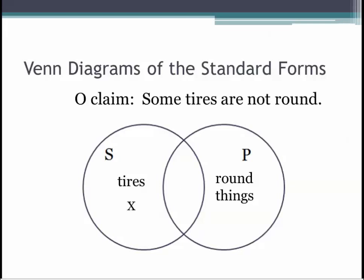The O proposition is saying that there is at least one tire that isn't round. This could mean that one isn't round or most of them aren't round. It doesn't matter how many aren't round, only that at least one isn't. At least one tire is excluded from the category of round things. So the O proposition is particular negative — its quantity is particular and its quality is negative.